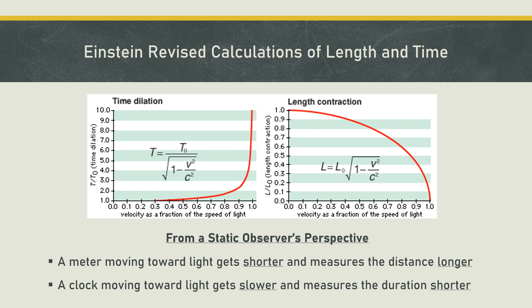The earth could be treated as one reference frame and a train moving on the earth as another. If the speed of light is constant, we can use that constant value to measure distance and durations. For example, we can emit a beam of light toward a mirror, let it reflect back, and multiply the round-trip time by the constant speed of light to know the distance, since distance equals speed multiplied by time.